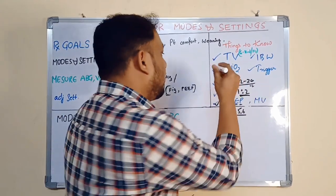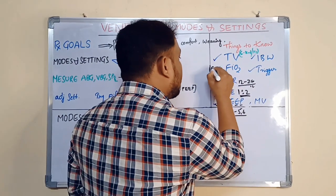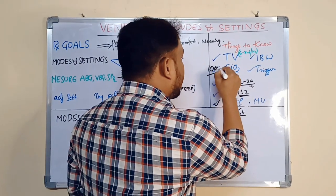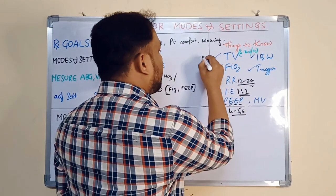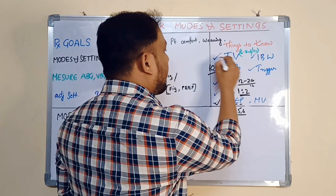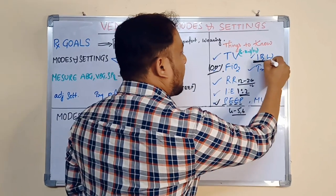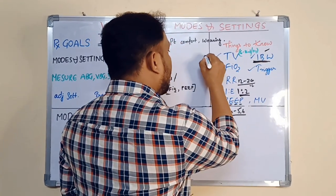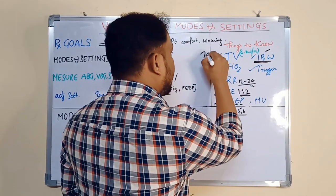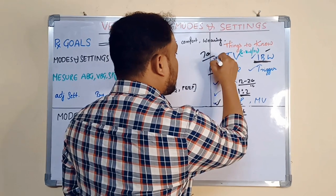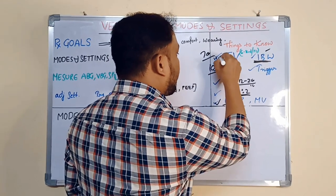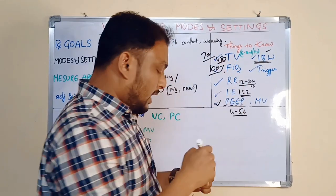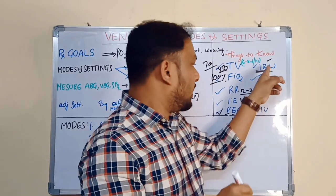FiO2 — usually you will start with 100%. Tidal volume is based on body weight, based on the ideal body weight. Suppose a 70 kg person — usually you will keep 4 to 6 ml per kg.